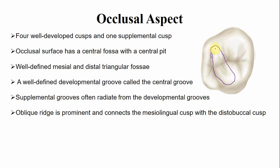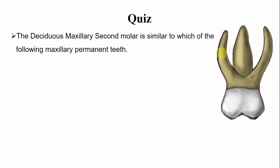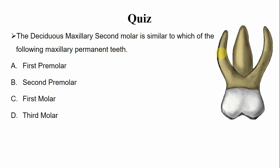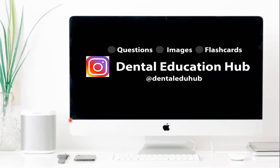That is all about the maxillary deciduous second molar. Now there is a quiz: this tooth is similar to which of the following permanent teeth — the first premolar, second premolar, first molar, or third molar? Write your answers in the comments below and I'll respond to each one of you. Follow us on Instagram at dentallyduhub for questions, images, and flashcards. Thank you very much and have a nice day.